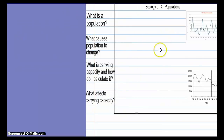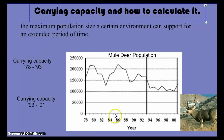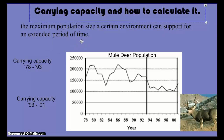Now we're going to talk about carrying capacity. Here's a graph of a mule deer population between 1978 and 2000 from Texas. Carrying capacity is defined as the maximum population size an environment can support for an extended period of time — you can think of it like an average. On this graph, try to figure out two carrying capacities: between 1978 and 1993, and between 1993 and 2001.